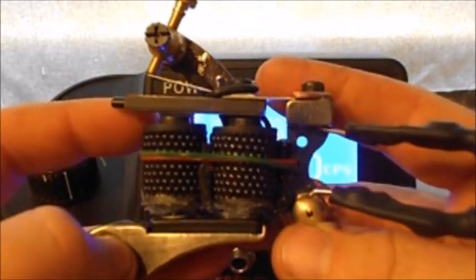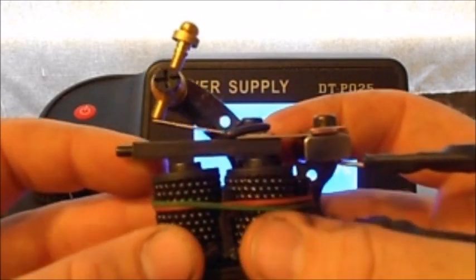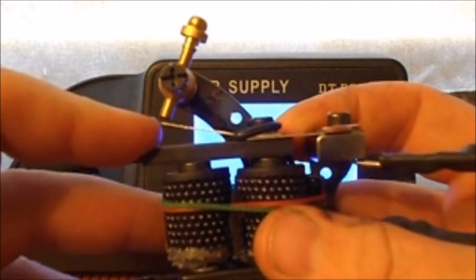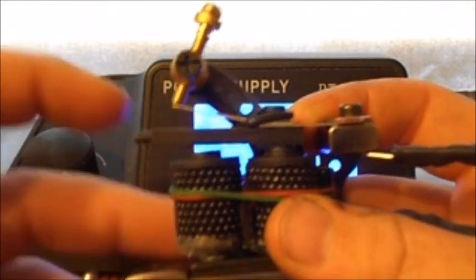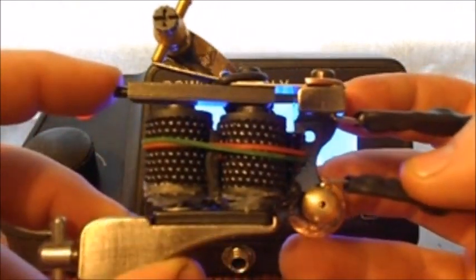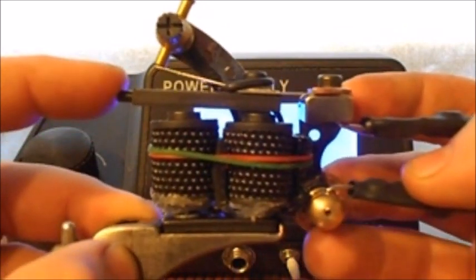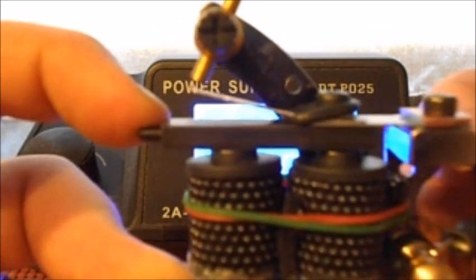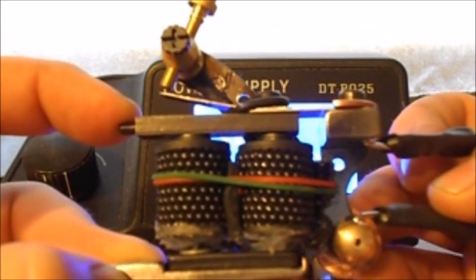For a tattoo machine, when the circuit's complete, when it's active, is when the front spring is touching the contact screw. And what happens is when it touches the screw, it turns on and pulls the armature bar away from the contact screw, turning it off. So your machine is turning on and off.